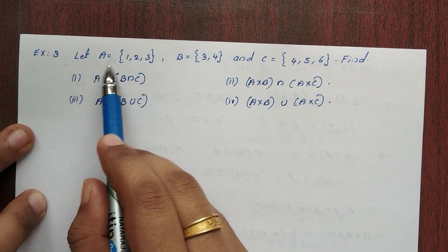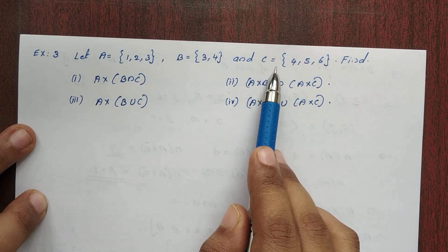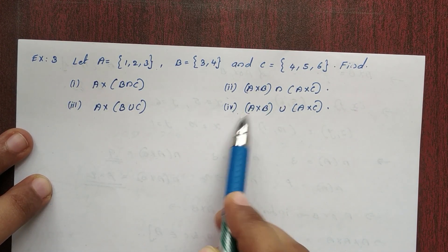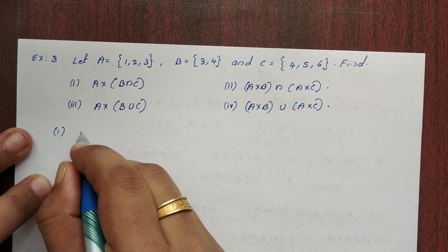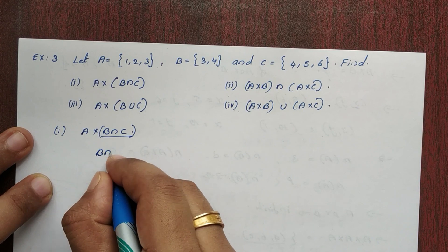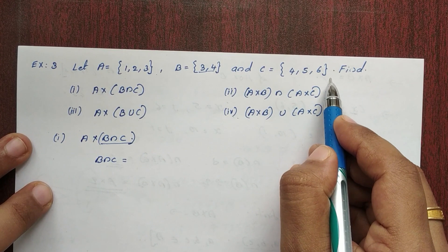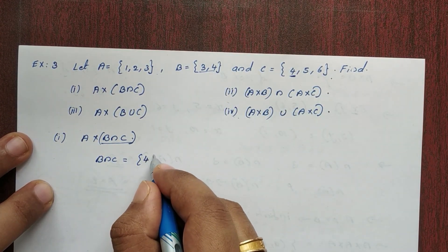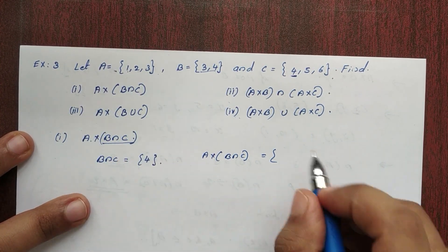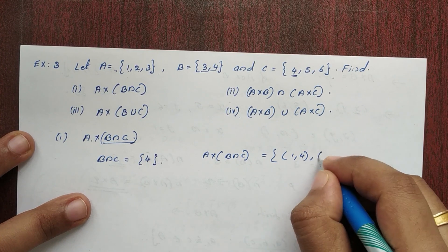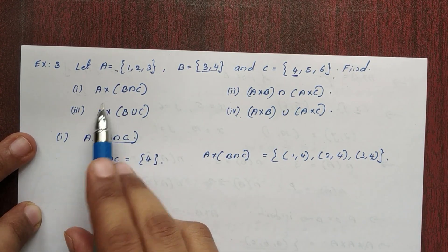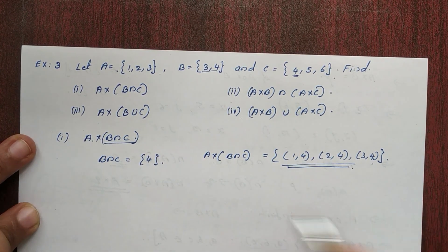Next, Example 3. Let A = {1,2,3}, B = {3,4}, C = {4,5,6}. First option: find A×(B∩C). First we find B∩C — the common elements of B and C — that is {4}. Then A×(B∩C): pairing set A elements with 4 gives {(1,4), (2,4), (3,4)}.